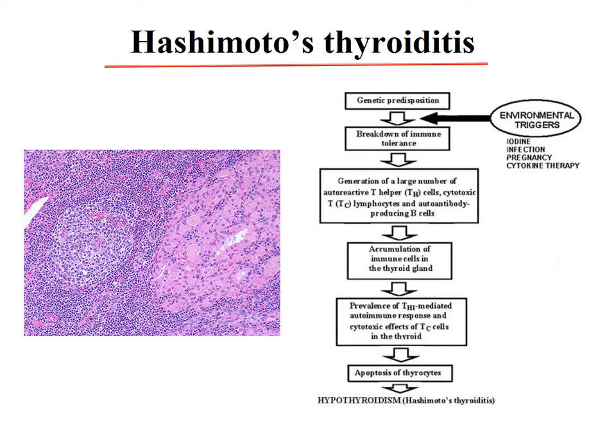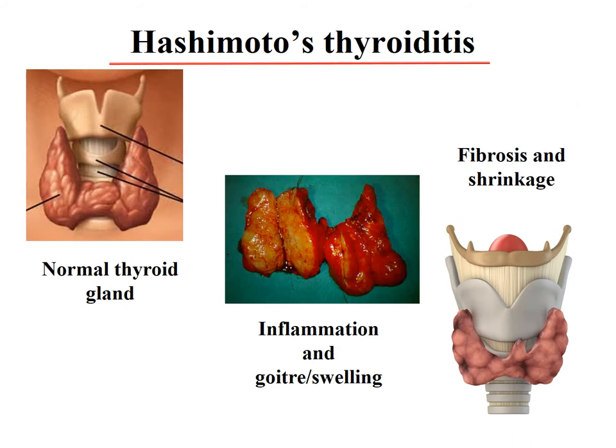You cannot interfere with the immune process without altering many other systems, so the only treatment is thyroid hormone substitution. With Hashimoto's, the inflammation causes painless enlargement. By the end, we have fibrosis and shrinkage — called Riedel's goiter — when the gland completely fibroses.